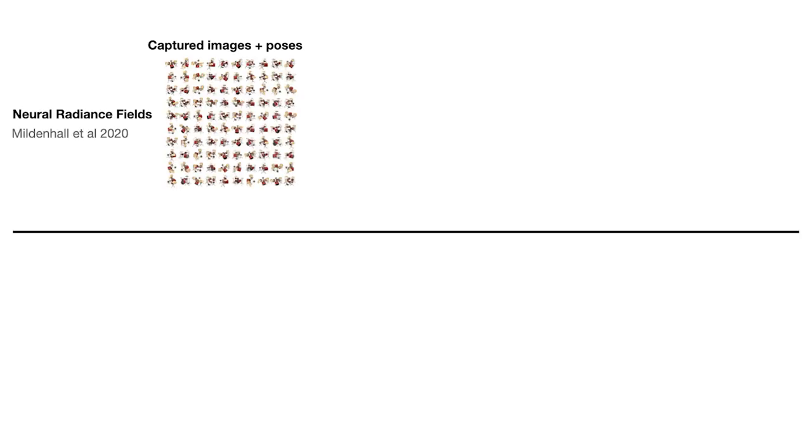In our work, we represent 3D objects with a neural radiance field scene parametrization. A neural radiance field provides a way to differentially render a scene that's parametrized by a multilayer perceptron, encoding color and density.